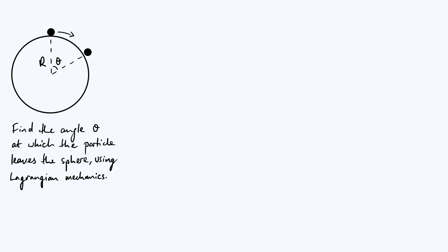Hello everyone. In this video we're going to revisit a classic physics problem. The problem is essentially you have a particle, as shown in this diagram, sitting at the top of a sphere. The particle is going to slide down the surface of the sphere starting from rest, and we're supposed to find the angle theta at which the particle loses contact with the surface of the sphere.